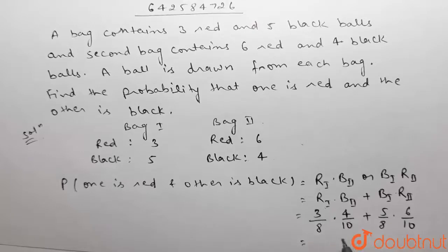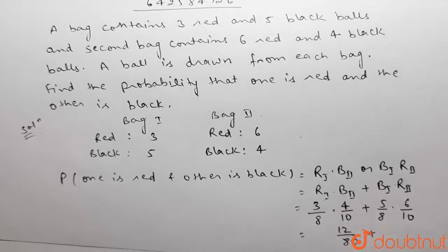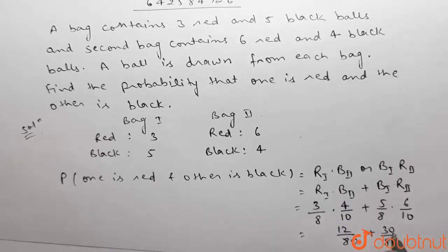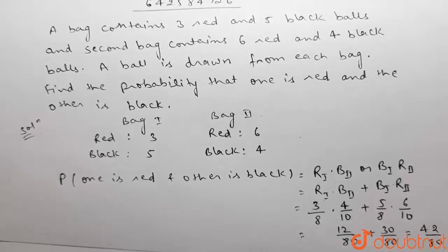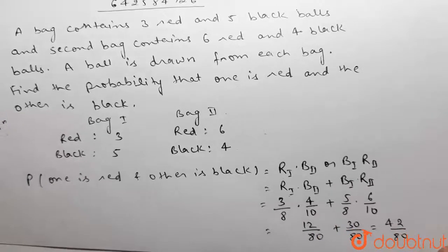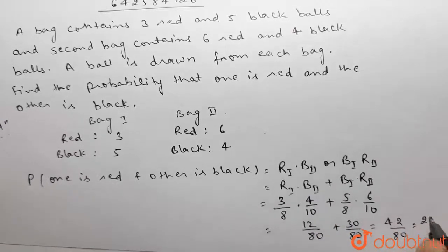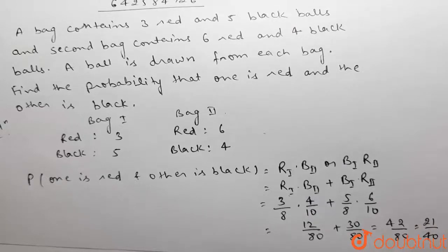3 × 4 equals 12, giving 12 by 80, plus 5 × 6 equals 30, giving 30 by 80. So 12 plus 30 equals 42, divided by 80, which simplifies to 21 by 40. The required probability is 21 by 40.